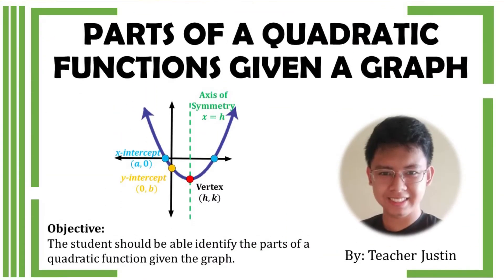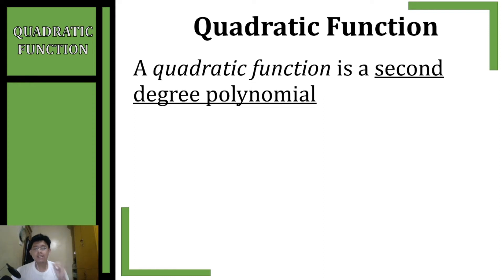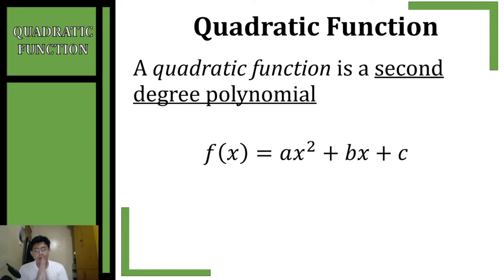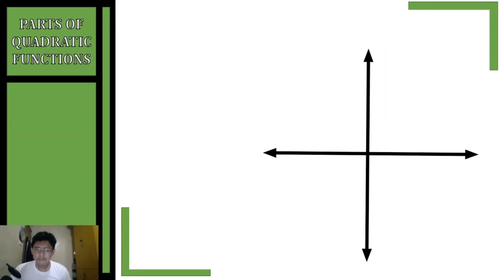Good day everyone, welcome to Math with Teacher Justin. On today's topic we're going to identify the parts of a quadratic function given a graph. A quadratic function is a second degree polynomial having a standard form of f(x) = ax² + bx + c, where a, b, and c are real numbers and a should not be equal to zero.